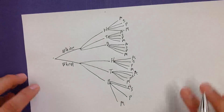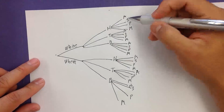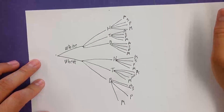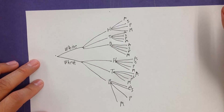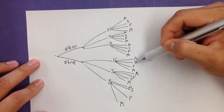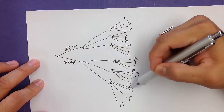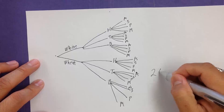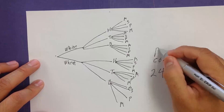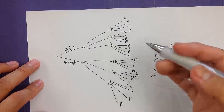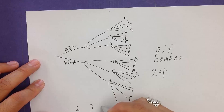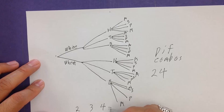To find the total number of combinations, we just count the number of leaves — the ends of the branches. Counting: 1, 2, 3, 4, 5, 6, 7, 8, 9, 10, 11, 12, 13, 14, 15, 16, 17, 18, 19, 20, 21, 22, 23, 24. We have 24 different combinations. We could also find this from the fact that we have two choices for bread times three choices for meat times four choices for cheese, which equals 24.